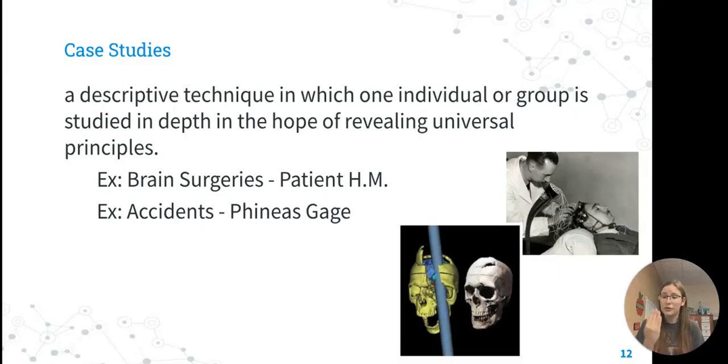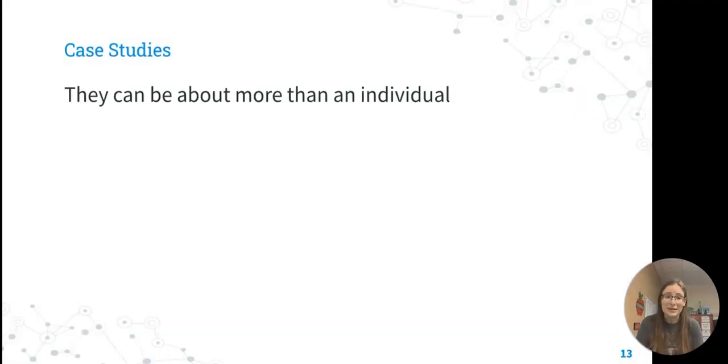Phineas Gage had a railroad spike go through his head, damaging large parts of his frontal lobe. We want to see what happens when these parts of the brain are damaged. It's really helpful. We can also use it for rare disorders like synesthesia, which is a really rare disorder. If we want to understand it better, it's going to be really hard for us to collect a lot of data from a large amount of people because it is rare. Using a case study allows us to go in-depth and learn more about these things.